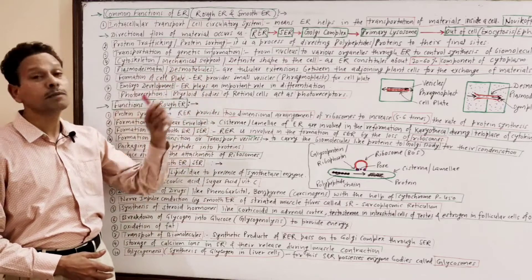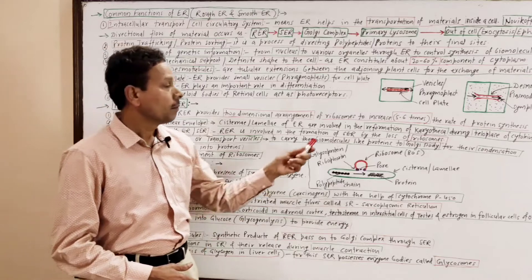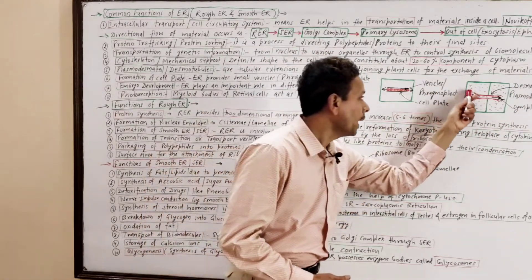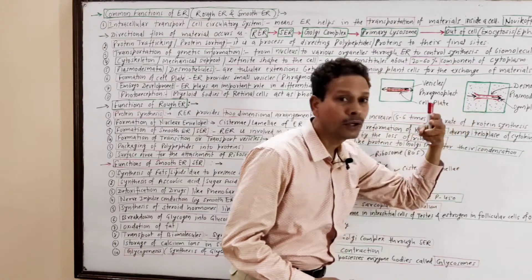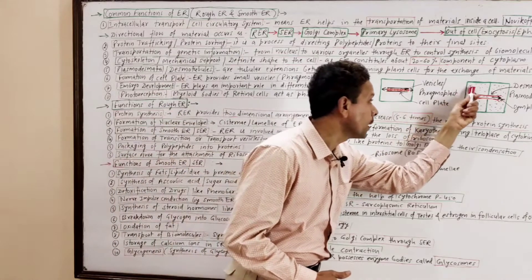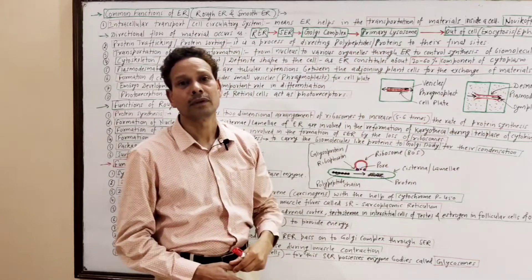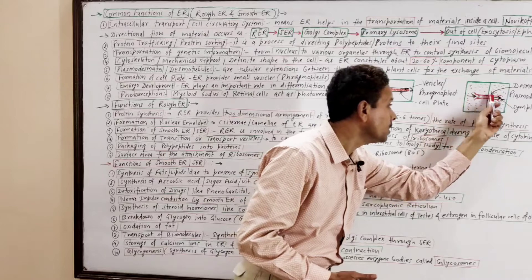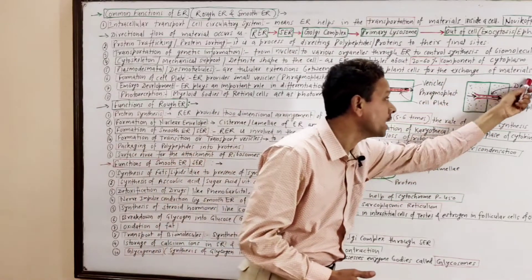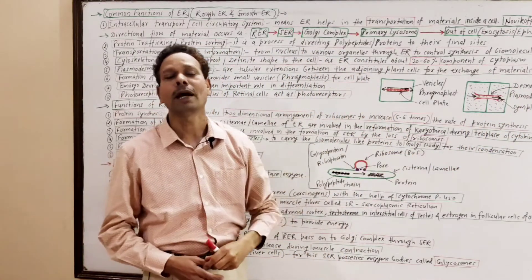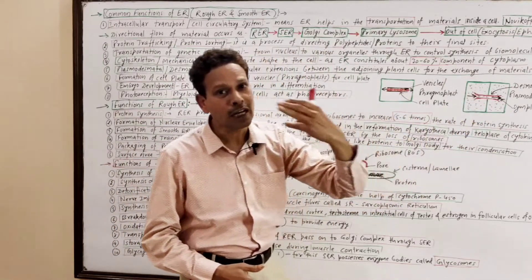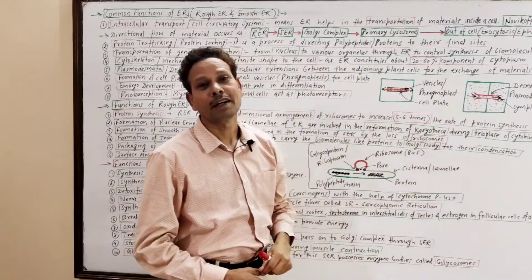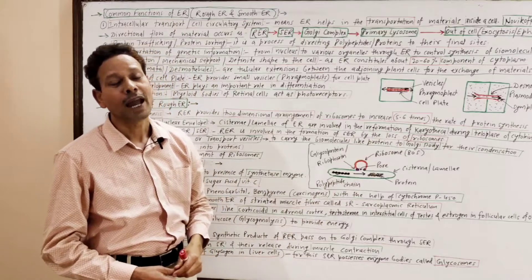Plasmodesmata and Desmotubules: between two adjacent plant cells, the endoplasmic reticulum produces tubular extensions. As a result, the cytoplasm of both cells remains connected — that connection is called a symplast. The protoplasm of both cells are fused due to the presence of these tubular extensions, which are called desmotubules or plasmodesmata, produced by the endoplasmic reticulum.